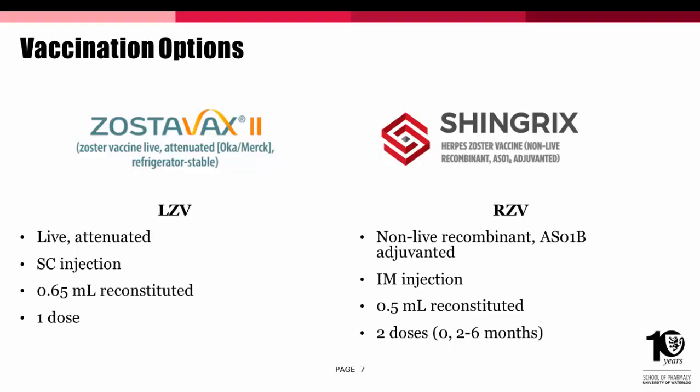There are two vaccines available to immunize against herpes zoster: Zostavax 2, more commonly referred to as Zostavax, and Shingrix. Zostavax has been around much longer than Shingrix, which was just released earlier this year. Zostavax is a live attenuated vaccine, commonly referred to in the literature as LZV, standing for live zoster vaccine. It is a subcutaneous injection with a dose of 0.65 ml after being reconstituted, and only one dose is needed for immunization.